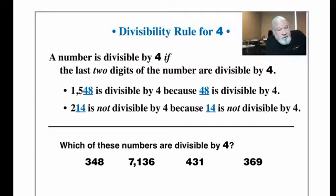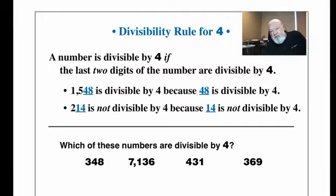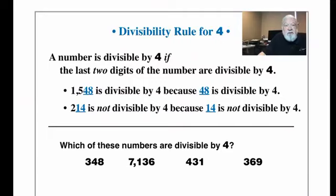Looking at the practice numbers — which are divisible by four? We only care about the last two digits. So 348 is divisible by four, and 7136 is as well. 431 can't be divisible by four because it's not even divisible by two. Similarly, 369 has an odd digit in the ones place, so the divisibility rule for four won't apply there either.